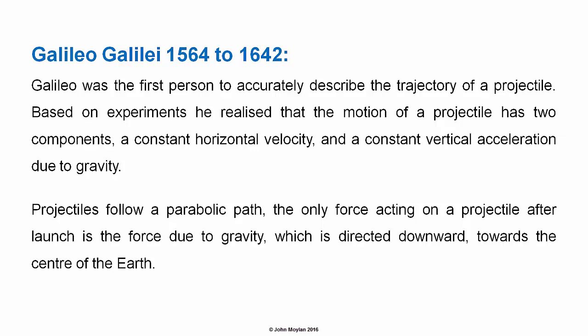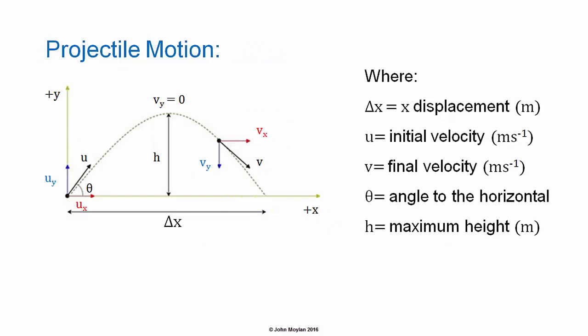The only force acting on a projectile after launch is the force due to gravity, directed downwards towards the center of the Earth. In the diagram, the projectile is shown with a parabolic path. Delta X is the X displacement or range of the projectile in meters. U is the initial velocity made up of components U subscript Y and U subscript X. V is the final velocity made up of components V subscript Y and V subscript X. Theta is the angle to the horizontal of U, the initial velocity.